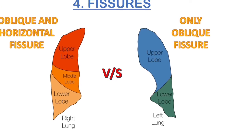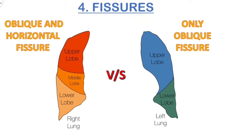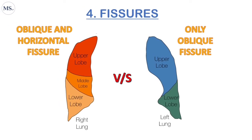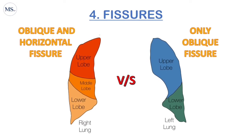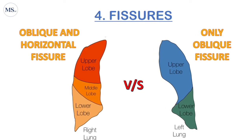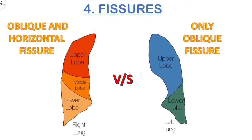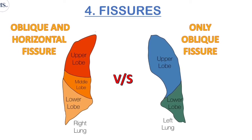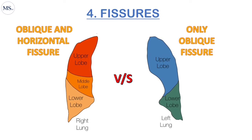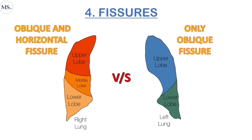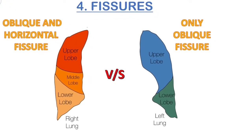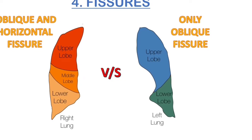The next difference is fissure — this is especially important for MBBS students studying medicine. A fissure is a line which divides the lungs. In the right lung there is a horizontal line between the upper lobe and the middle lobe, called the horizontal fissure. Between the middle lobe and the lower lobe there is a diagonal line called the oblique fissure. In the left lung there is only one fissure: the oblique fissure.